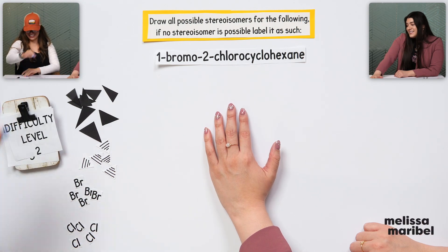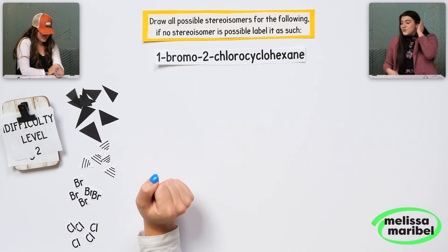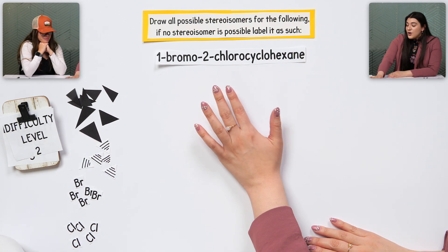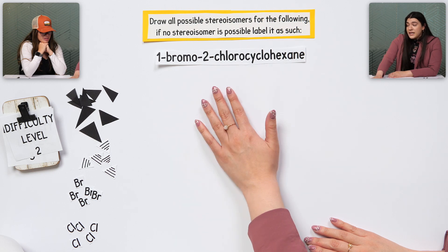We're jumping right into it. We're jumping right into difficulty level two. So this first one is just saying, draw all possible stereoisomers for the following. If no stereoisomer is possible, label it as such.